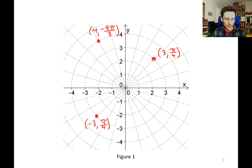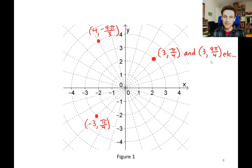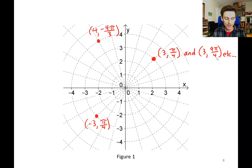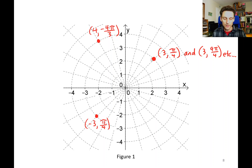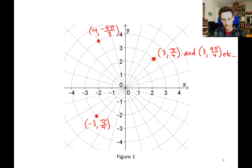What if you started at (3, π/4) and went all the way around the circle — in other words, added 2 pi? You would get to exactly the same point, but it has a different r-theta combination. This would be (3, 9π/4). With Cartesian coordinates, each point had a single x-y representation. But with polar coordinates, you can have an infinite number of representations for a single point on the plane.